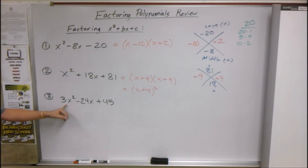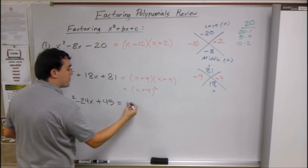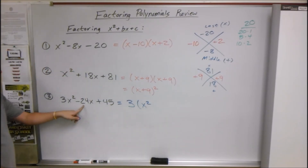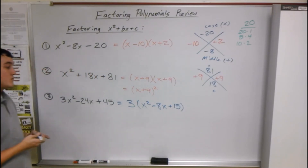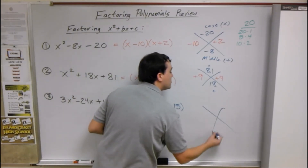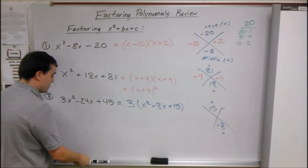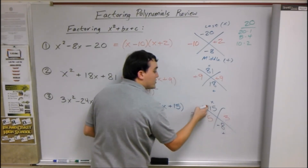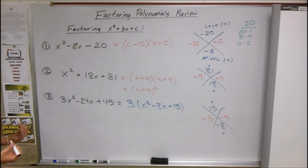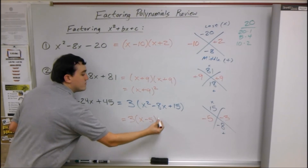The last one — notice there's a number in front of the x². First check for a greatest common factor: 3 goes into all these numbers, so we take out a 3. That gives us x² - 8x + 15. For this we need two things that multiply to equal 15 and add up to -8. The factors of 15 are 5 and 3. Since they add up to a negative, both must be negative: -5 and -3. So we get 3(x - 5)(x - 3).